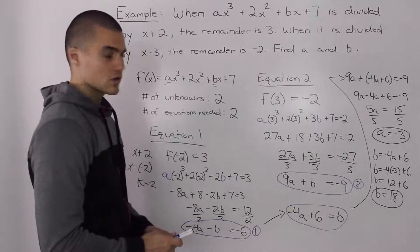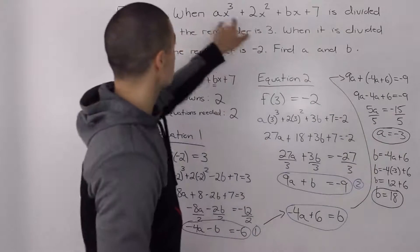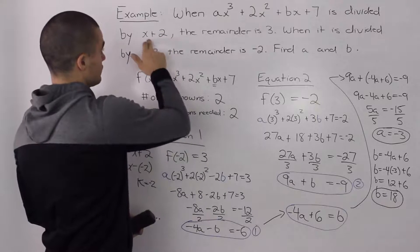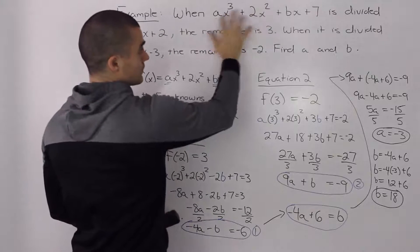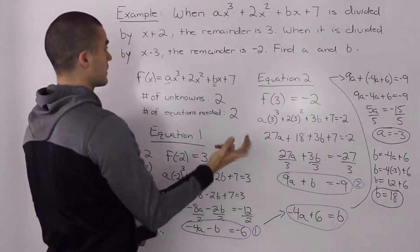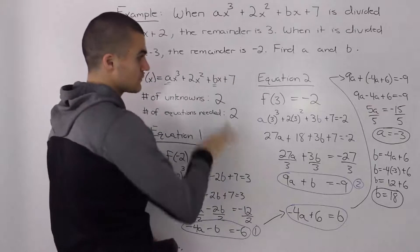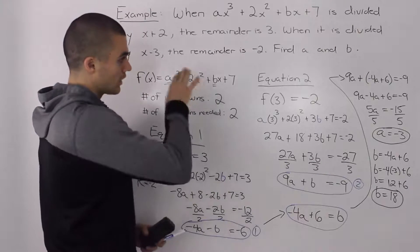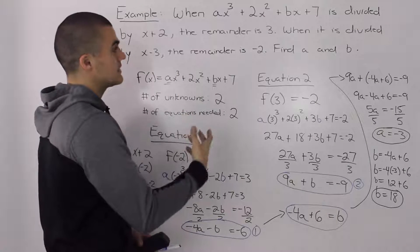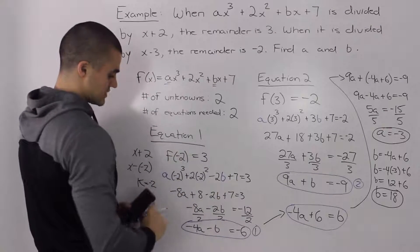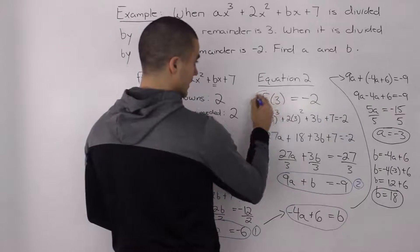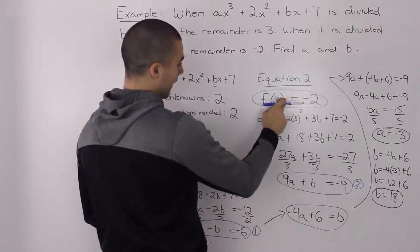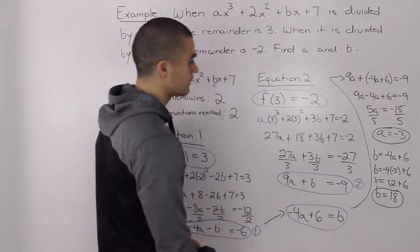You can also check your work by taking these a and b values, plugging them into the dividend, and using the remainder theorem or doing long division or synthetic division. Divide by x plus 2 and see if you get a remainder of 3, then divide by x minus 3 and see if you get a remainder of negative 2. At minimum, use the remainder theorem: plug in negative 2 for x and see if you get 3, then plug in 3 for x and see if you get negative 2.